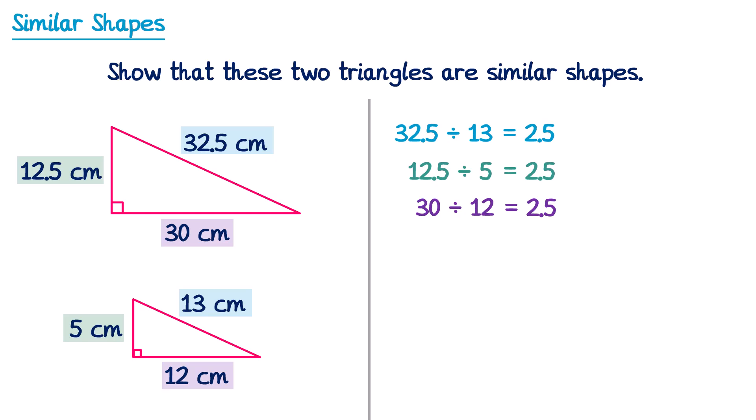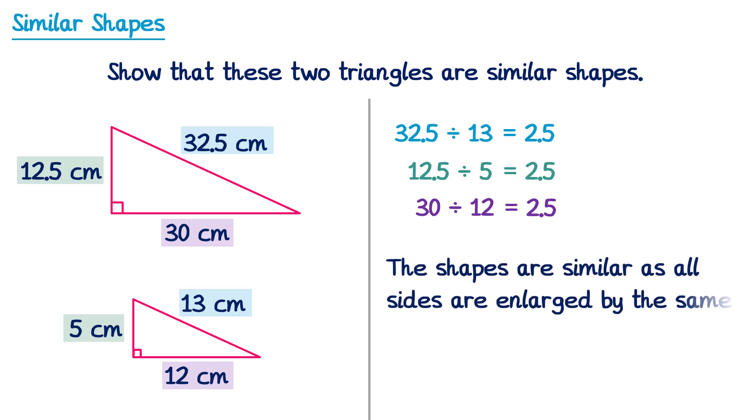Since we had the same scale factor every time, these shapes must be similar. If the scale factor were different for any of the pairs it would not be a similar shape. We can write a concluding statement: the shapes are similar as all of the sides are enlarged by the same scale factor of 2.5.